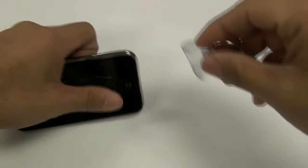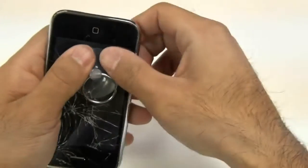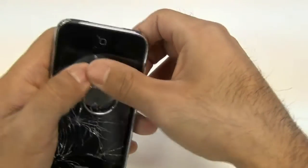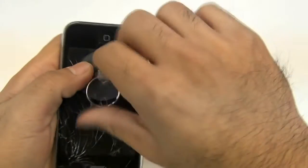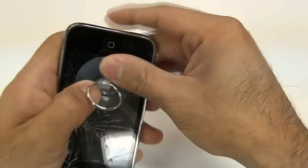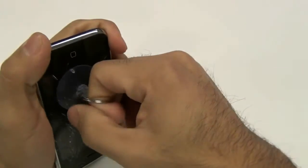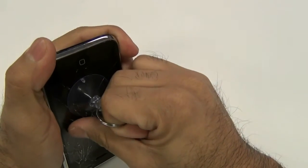Next, using a suction cup, place it on the screen. If your screen is cracked, use a piece of tape to cover the cracks so you get good suction on the screen, then pull up away from the screen.